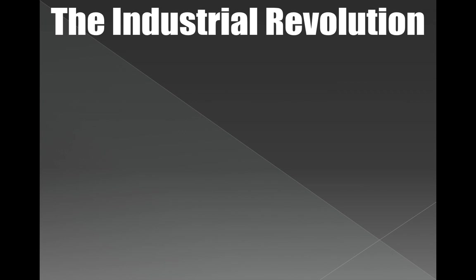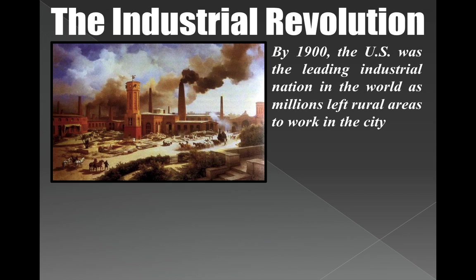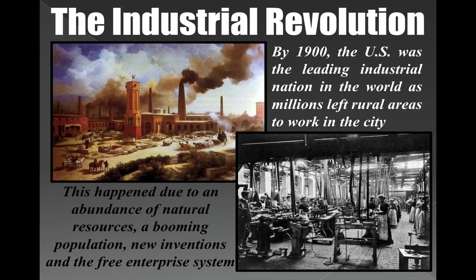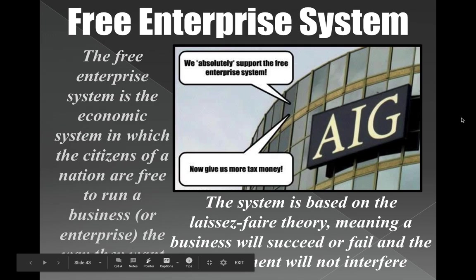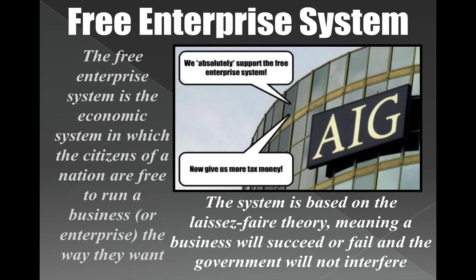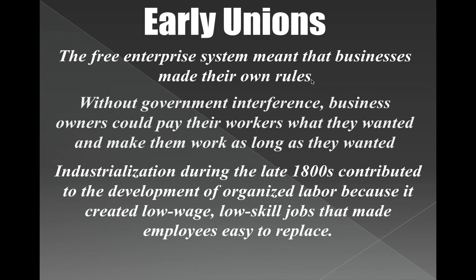The last section is about the birth of unions. By the 1900s, the United States was becoming a leading industrial world with lots of factories and lots of workers. It was all run by the free enterprise system, where people could own a business and run it without government interference — making their own rules about hours, products, and workers. In the late 1800s and early 1900s, that meant working with low-wage, low-skilled labor that could be easily replaced.